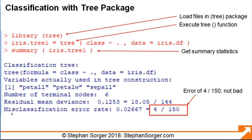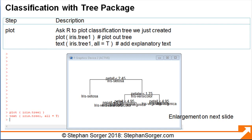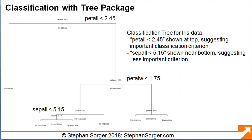The summary function output shows the result of the classification tree. It tells us that R used only three of the four variables to build the tree — apparently sepal width was not important. It also shows that the misclassification error rate was 4 over 150, or about 2.7%. We invoke the plot function to generate a plot of the tree, and the text function to add explanatory labels. The tree shows the PEDL less than 2.45 classification criterion at the very top, indicating it is the most important, while sepal less than 5.15 appears at the bottom as less important.